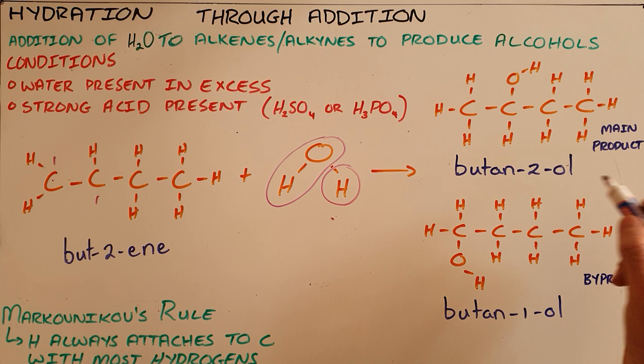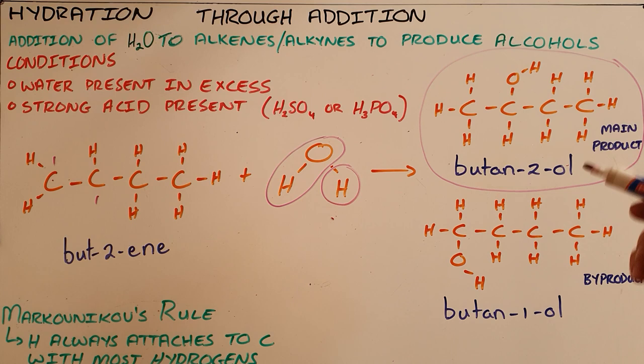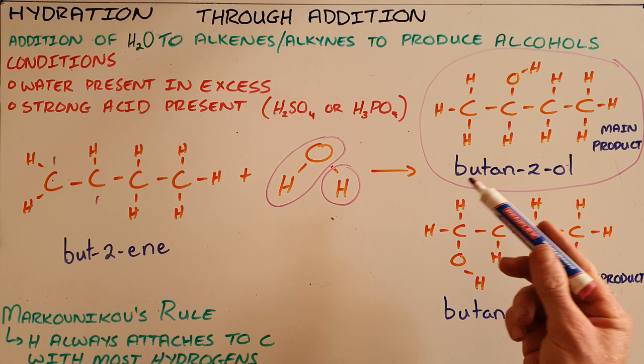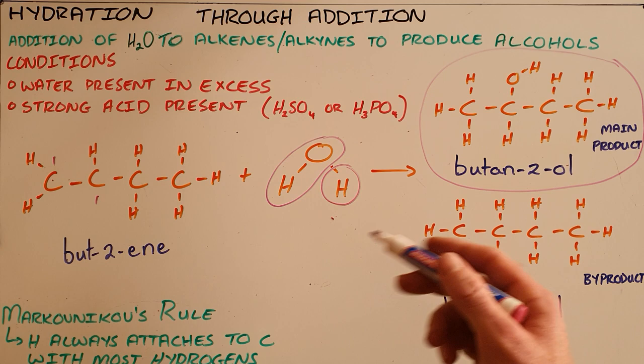As a result we would say that butan-2-ol is the main product because the hydrogen has attached to the carbon with the most hydrogens by Markovnikov's rule, which leaves the hydroxyl to the second carbon.